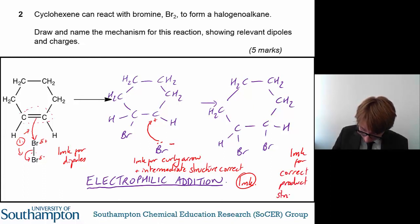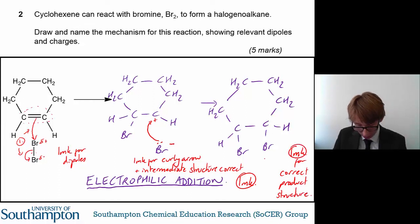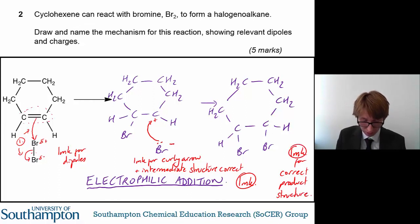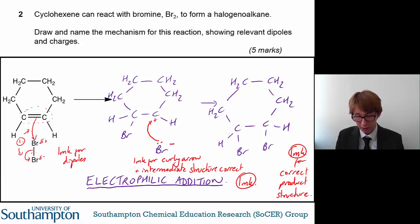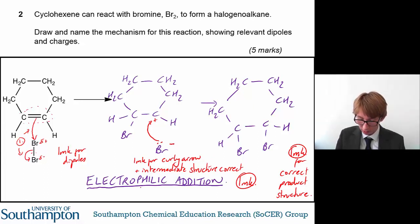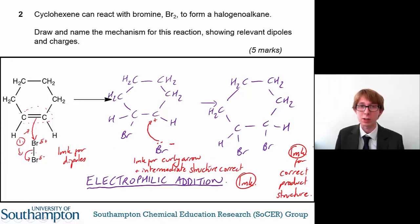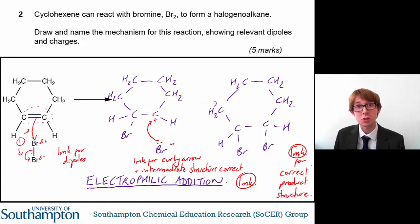That should add up to five: one for the first two curly arrows, one for the dipoles, one for the curly arrow and intermediate structure, one for the name of the mechanism, and one for the correct product structure. That's how to do question two.